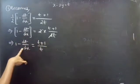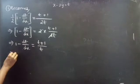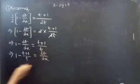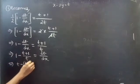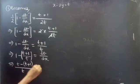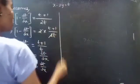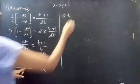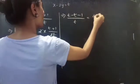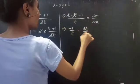Taking dt/dx to the right-hand side and (t plus 1)/t to the left-hand side, we write 1 minus (t plus 1)/t equals dt/dx. This becomes (t minus t minus 1)/t, so minus t and plus t cancel, giving minus 1/t equals dt/dx.